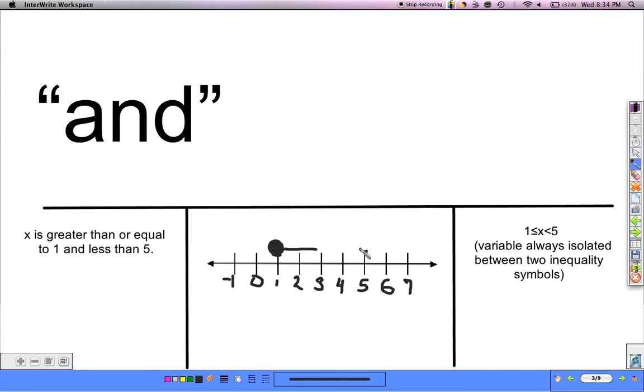It's also less than 5. So I know I'm going to have an open circle at 5 and fill in backwards this way, and I just want to have the line in between.